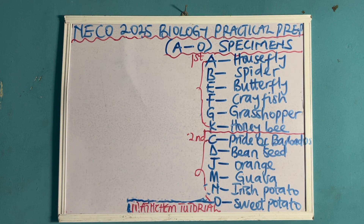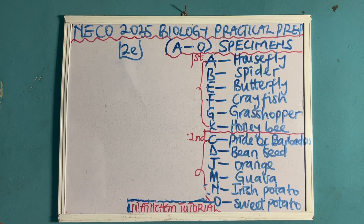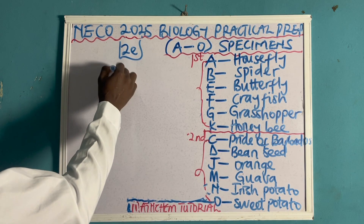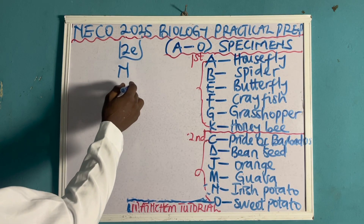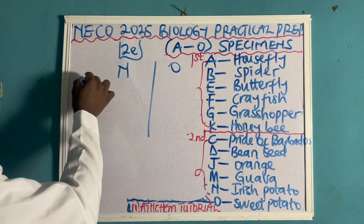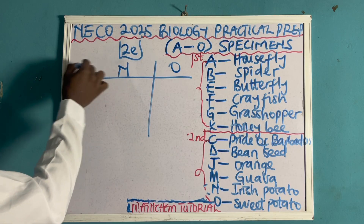Another thing they can ask — let me name this 2E — is to mention two differences between specimen N and specimen O. Specimen N is Irish potato and specimen O is sweet potato. Let me tabulate the differences between them based on the features we'll use to differentiate them.